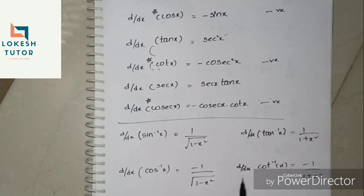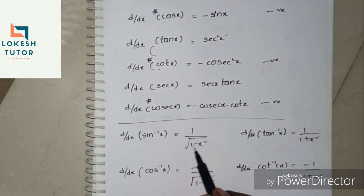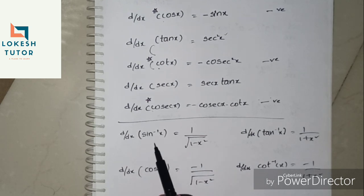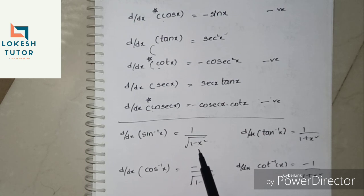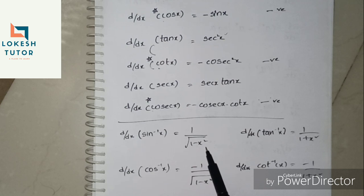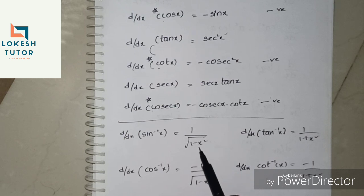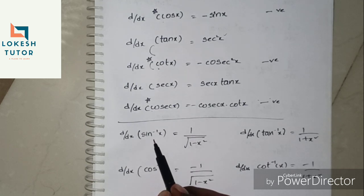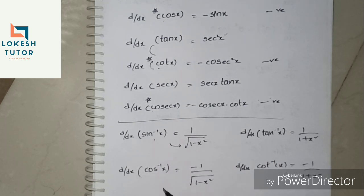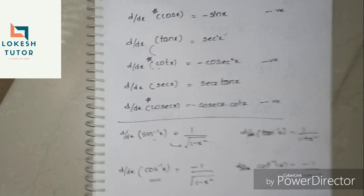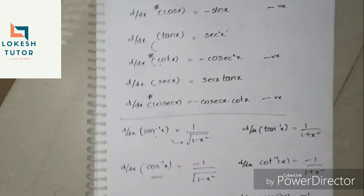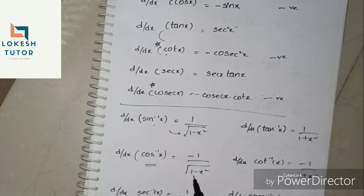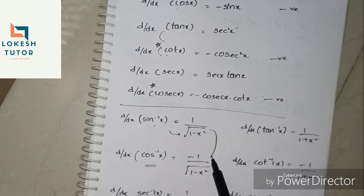Now let's look at inverse trigonometric functions. d/dx of sin⁻¹x is 1 divided by √(1 minus x²). You can verify this because 1 minus sin²θ equals cos²θ, and the square root gives cos θ. d/dx of cos⁻¹x is just the negative of that: minus 1 divided by √(1 minus x²).